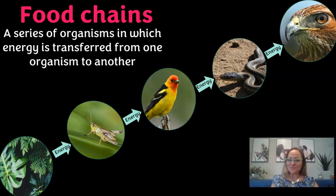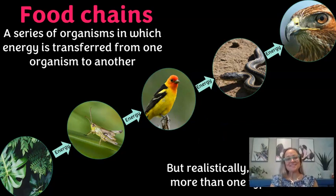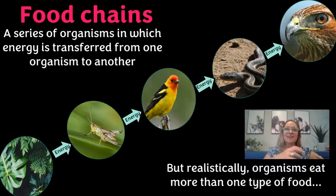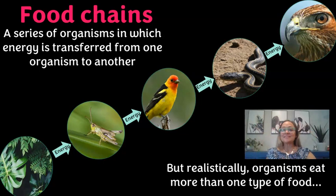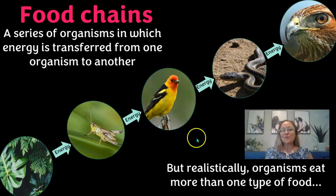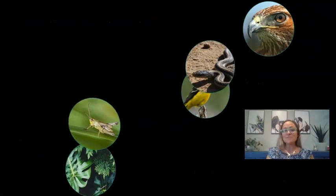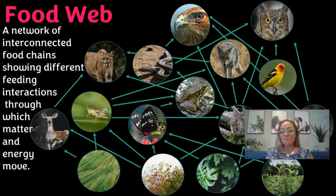The little western tanager might be an omnivore eating insects and seeds. But realistically in ecosystems, life is more complicated than single food chains — a snake or hawk is going to eat more than one organism. There's a variety of food choices, so we represent the more realistic flow of energy in what we call a food web.